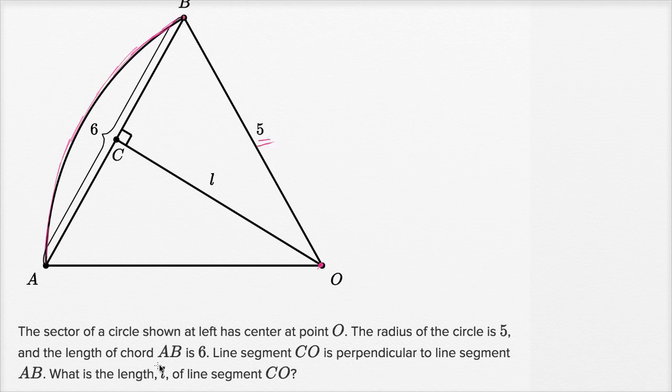So OB is five, and the length of chord AB is six, and they've labeled that from A to B. Line segment CO, this is CO, is perpendicular to line segment AB, and they've labeled that for us as well. What is the length L of line segment CO?